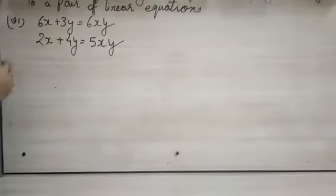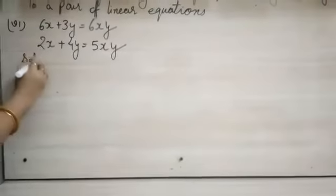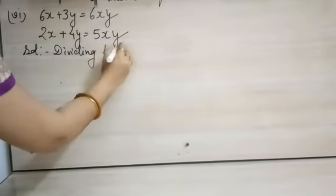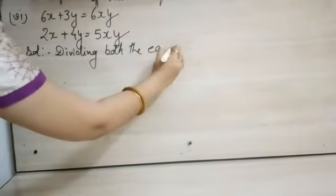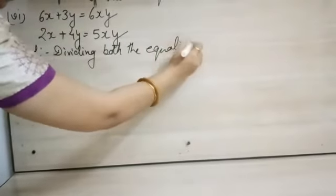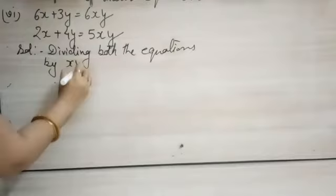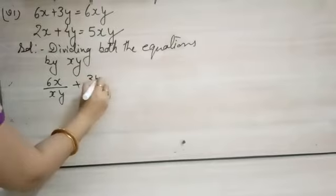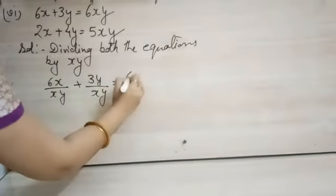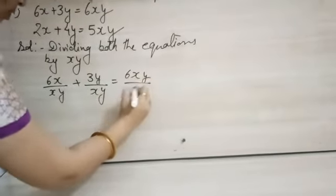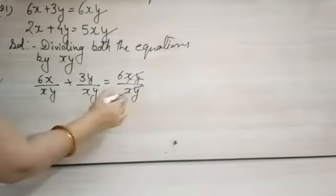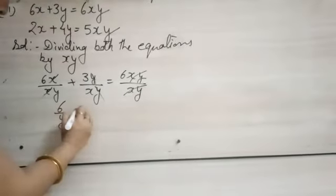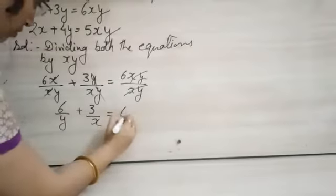Dividing both the equations by xy. So 6x upon xy plus 3y upon xy is equal to 6xy upon xy. xy xy will be cancelled, y with y cancelled, x with x cancelled. It became 6 upon y plus 3 upon x is equal to 6.